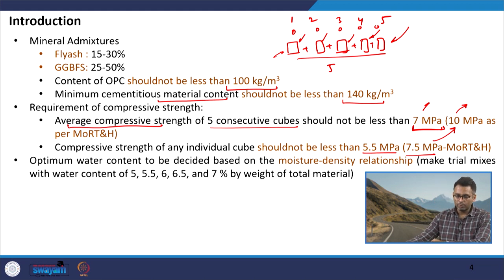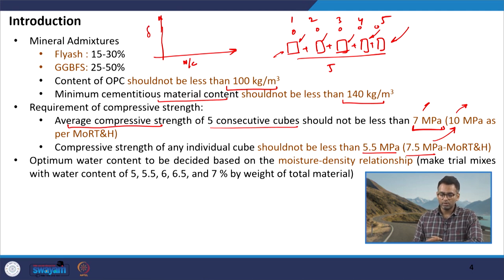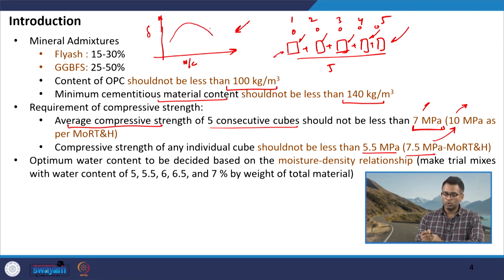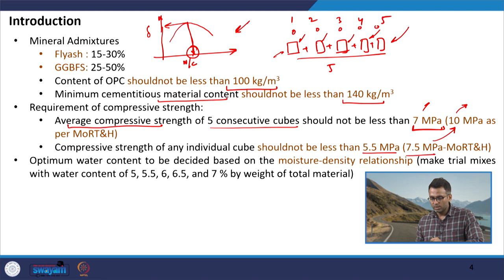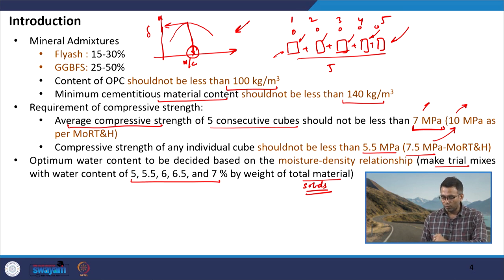The optimum water content is determined using the moisture-density relationship — DLC samples are made at varying moisture content and the density of each sample is calculated. This is similar to the proctor density concept in soil mechanics. We expect a curve where density peaks at a particular moisture content, and that moisture content is used as the design moisture content.